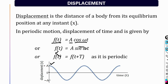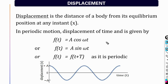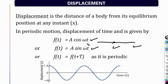Displacement is also related to a trigonometric function which is periodic in time. Displacement is either A cos(ωt) or A sin(ωt). If at t equal to zero the particle is at the equilibrium position, displacement is represented as A sin(ωt). If the particle starts at the extreme position, it is represented as A cos(ωt).